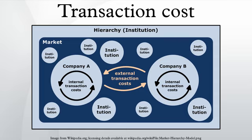Oliver E. Williamson was awarded the 2009 Nobel Memorial Prize in economics. According to Williamson, the determinants of transaction costs are frequency, specificity, uncertainty, limited rationality, and opportunistic behavior.